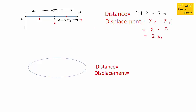You can also find displacement using the straight-line method: the straight line between O and C has a length of 2 meters and the direction is east. So displacement is 2 meters to the east.